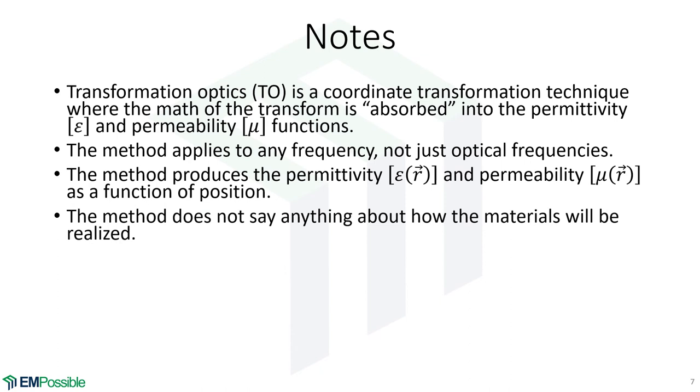Transformation optics ends after we get this crazy map of permittivity and permeability. It doesn't say anything about how we're going to realize those values. It's us that knows we probably need some metamaterials. Maybe we need some high dielectric constant ceramics or other things like that. But that's all us. Those are all steps that really come after transformation optics.